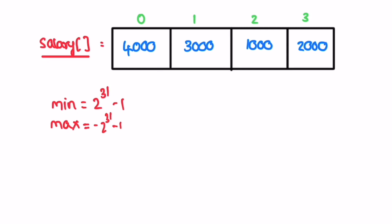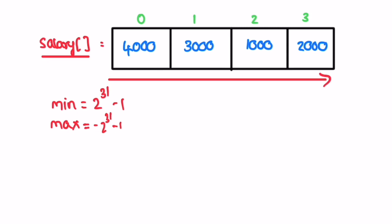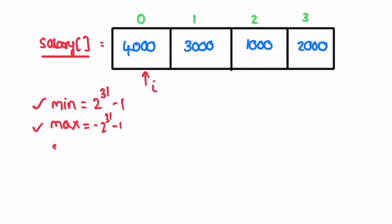Now we iterate through the input array from left to right, starting from index 0 till the end. In each iteration we update minimum and maximum. We also need to find the sum to calculate the average, so we declare a variable sum initially set to 0. These three variables keep updating until we reach the end of the array.